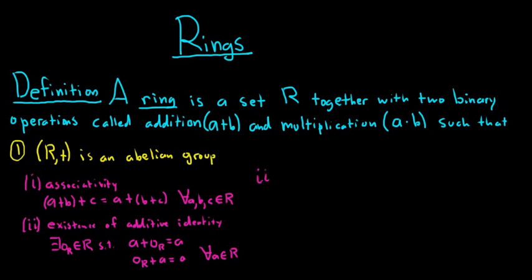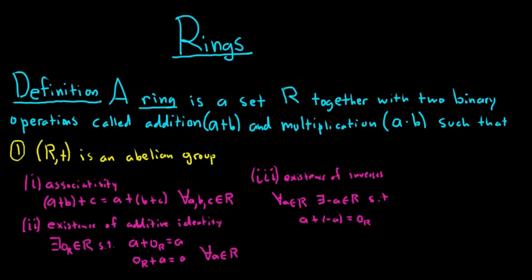The third condition is the existence of inverses. Given any element a in R, there exists an element denoted negative a in R, such that a plus negative a equals the additive identity, and negative a plus a also equals the additive identity. These three conditions make up an abelian group, which is the first condition in the definition of a ring.